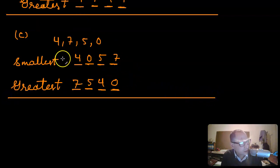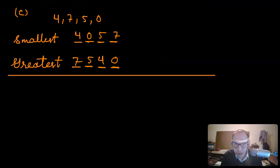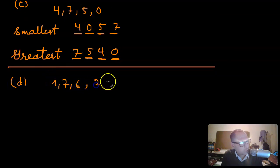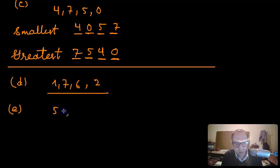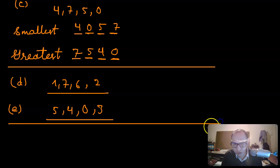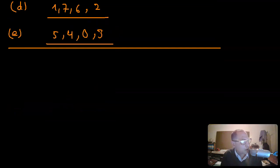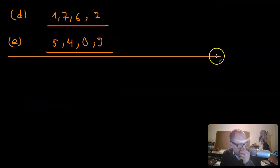That's another example. Part D of this is one, seven, six, and two — you can give it a try. Part E is five, four, zero, and three — also give it a try, and make the smallest and greatest four-digit numbers using those four digits.